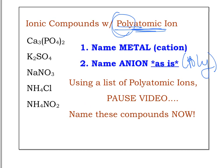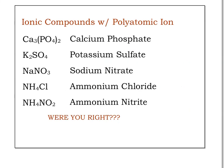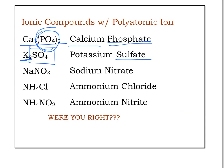Use your polyatomic ion chart and try these examples. For the first one: calcium is named first, then PO4 — we look at the chart and see it has a minus-three charge and is called phosphate. So this is calcium phosphate. The next one: K is potassium, and SO4 from the chart is called sulfate — so we get potassium sulfate.